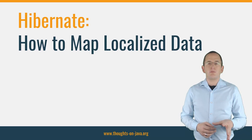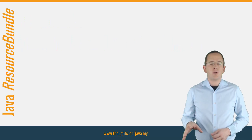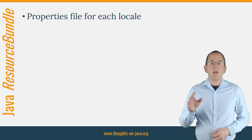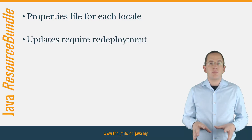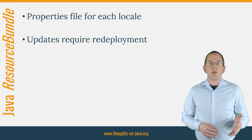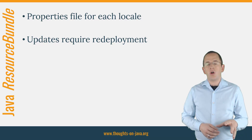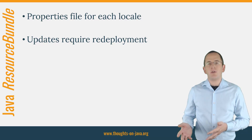The two most common approaches are using Java's resource bundles and storing the translations in the database. This standard Java feature provides a simple to use and very efficient option to implement internationalization. You need to provide a properties file for each locale you want to support, and you can then use the resource bundle class to get the property for the currently active locale. The only downside of this approach is that the different translations are hard to maintain. If you want to add, change, or remove the translation of a property, you need to edit one or more properties files, and in the worst case, that might even require a redeployment of your application.